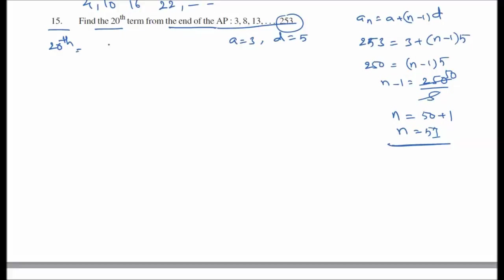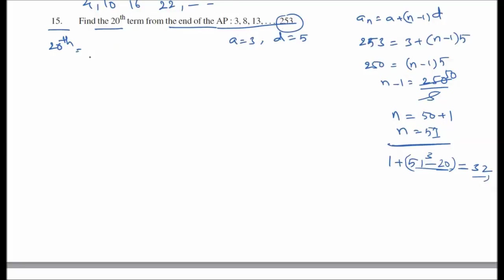We need to find the 20th term from the end. Counting from the end, the 20th term from the end is the 32nd term from the beginning, since 51 minus 20 plus 1 equals 32. So we need to find a_32.